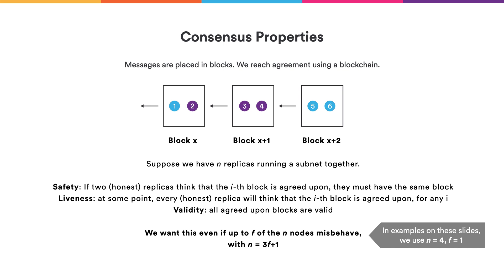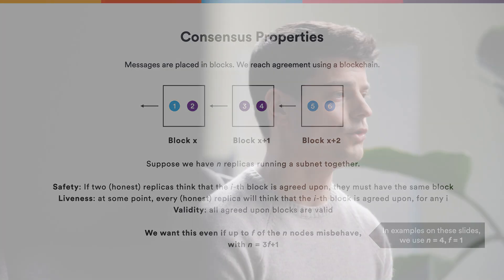More precisely, we want what we call safety: if two honest replicas think they agree on the blockchain up to a certain point, then they must in fact have the same view of the blockchain up to that point. Secondly, we want liveness, meaning that the blockchain keeps growing and we keep agreeing on more and more blocks. Third, we want validity, meaning that all the blocks and the messages in the blocks are actually valid. We want all these properties to hold even if some nodes might misbehave — offline or even actively malicious — as long as less than a third are offline or malicious.